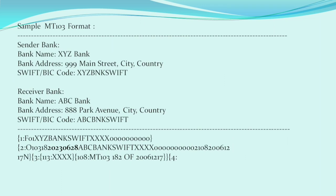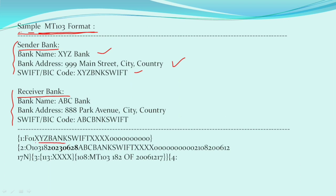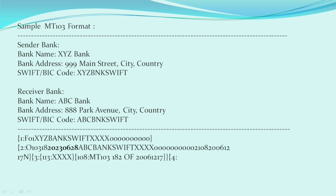Now let's understand the structure and specific fields of the MT-103 SWIFT message. Looking at the sample MT-103 format: sender bank details like bank name, address, and SWIFT code are mentioned here, and similarly receiver bank details are mentioned here. You will also find SWIFT codes of the sender and receiver bank along with some numeric values — these are system-generated numbers which help to track the payment throughout the entire process from initiation to completion, and also help both sender and recipient to trace the message.